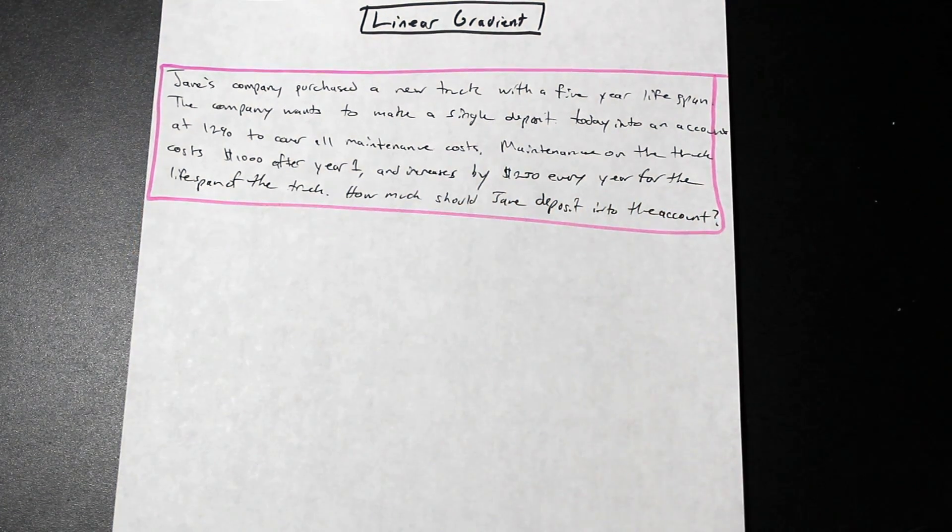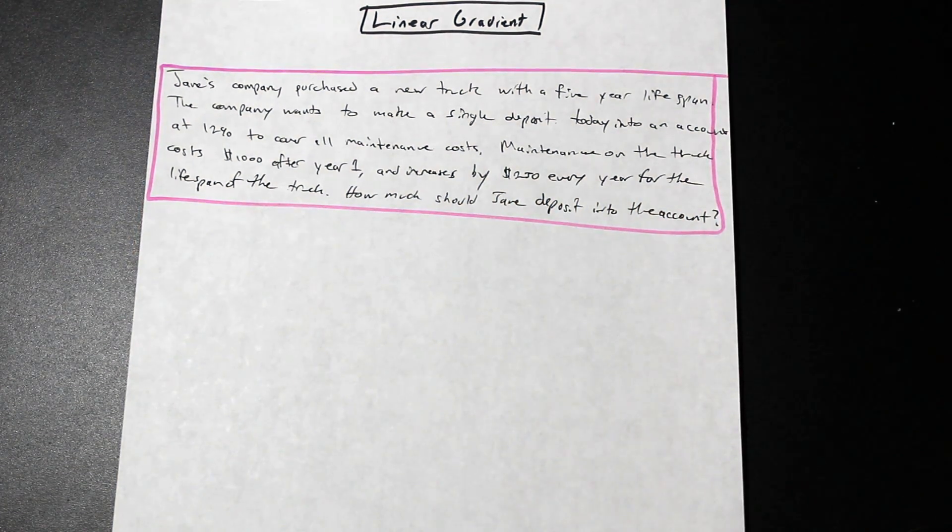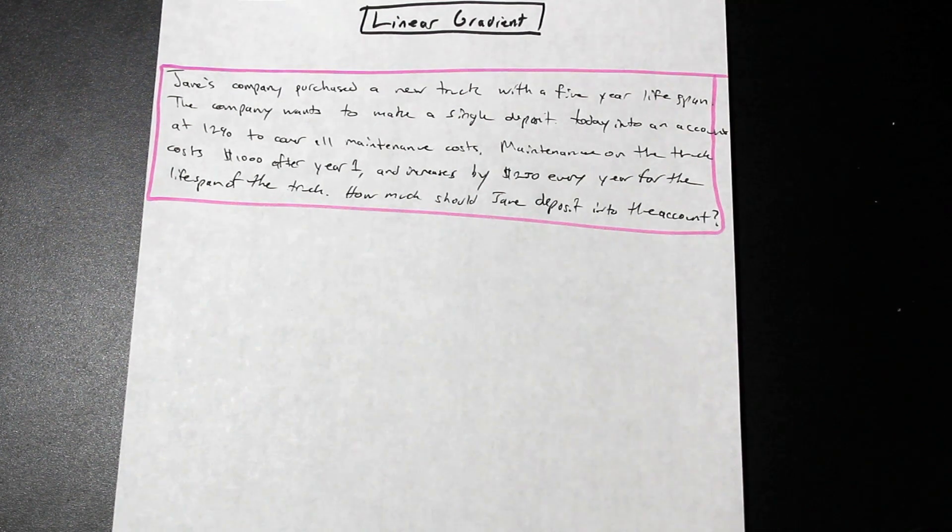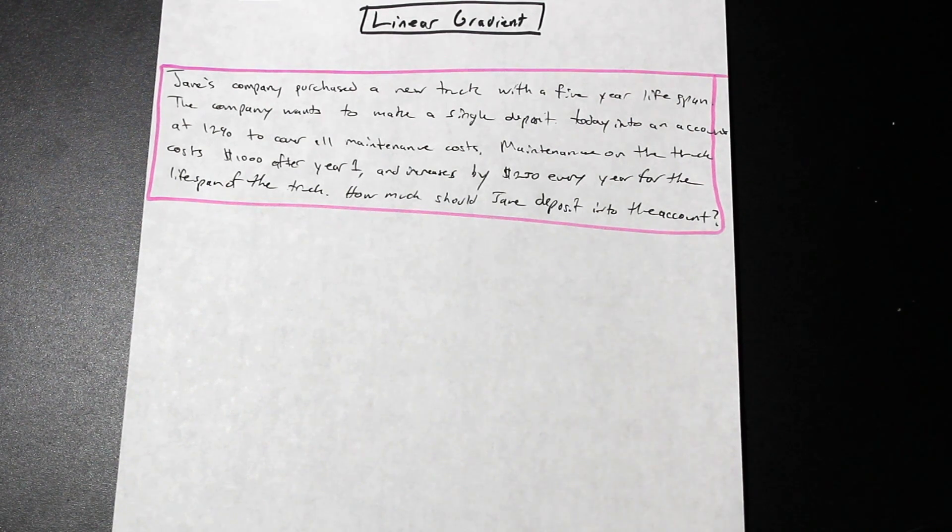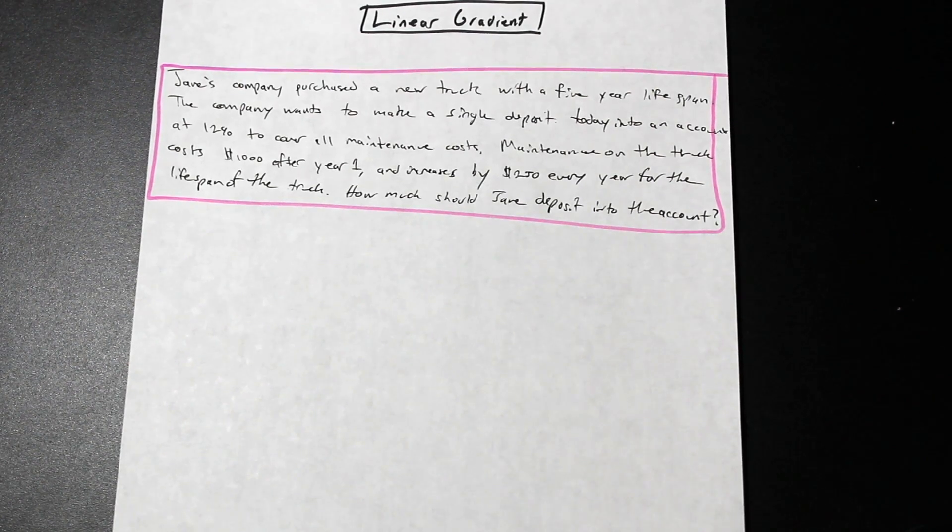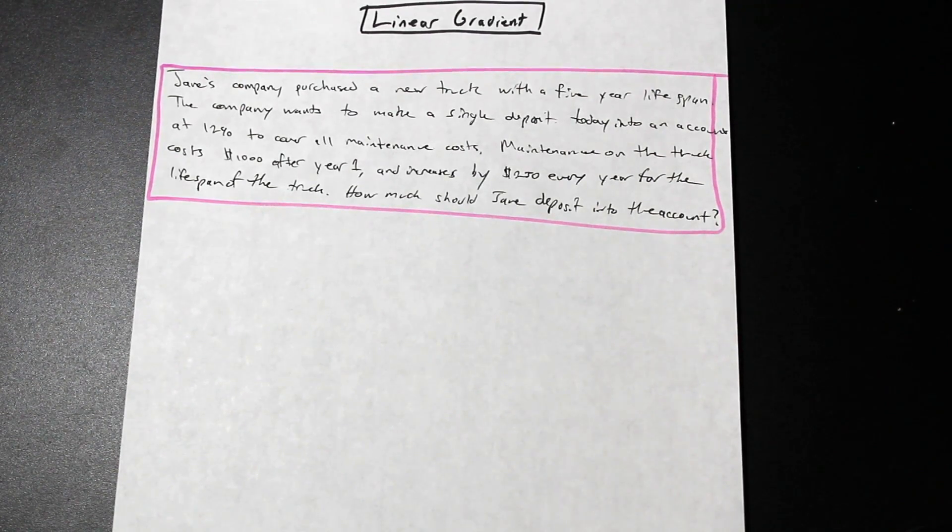Hey guys, Fred here, AF Math and Engineering. Today we're going to do a quick video for you on the linear gradient in engineering economics. A linear gradient is when you have a linearly increasing series of deposits or payments, increasing at a rate that is linear, so it is not increasing exponentially or anything like that.